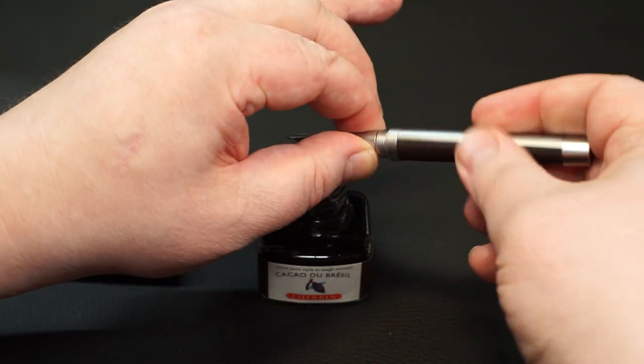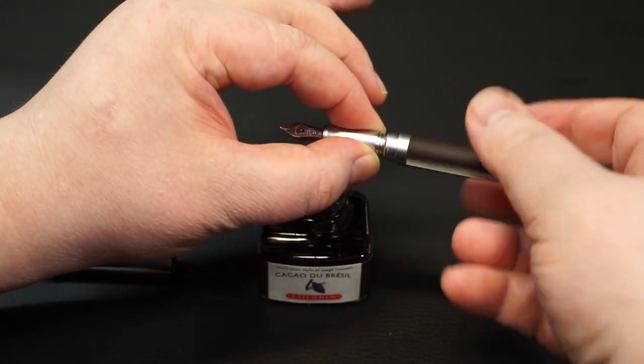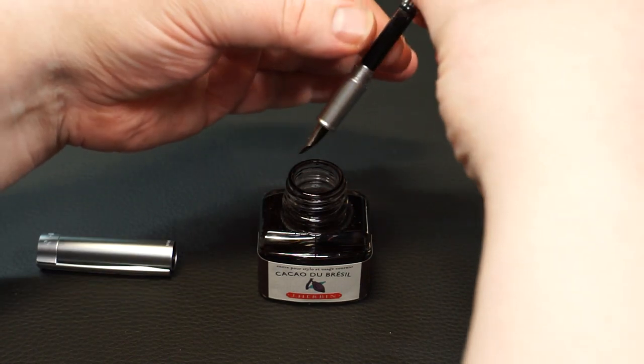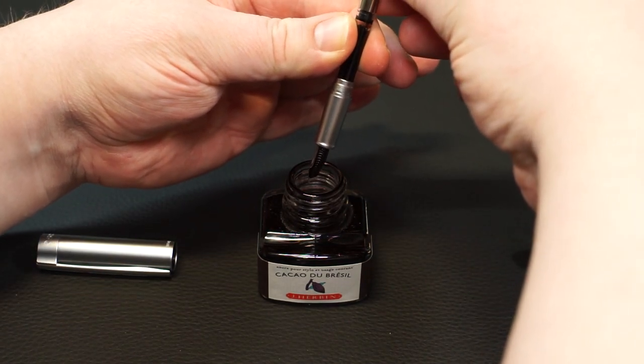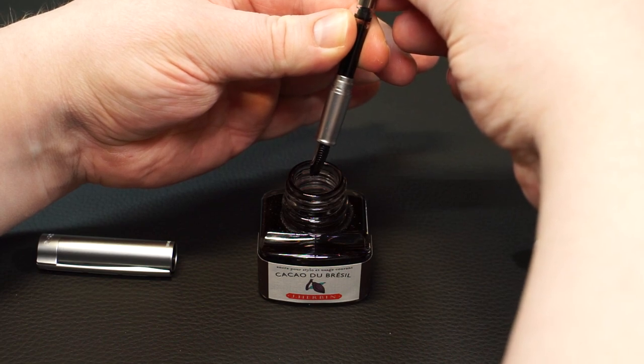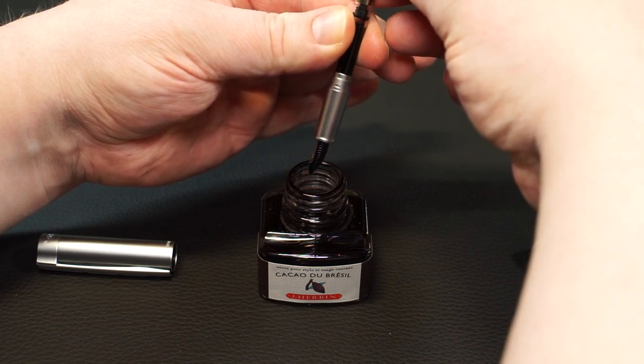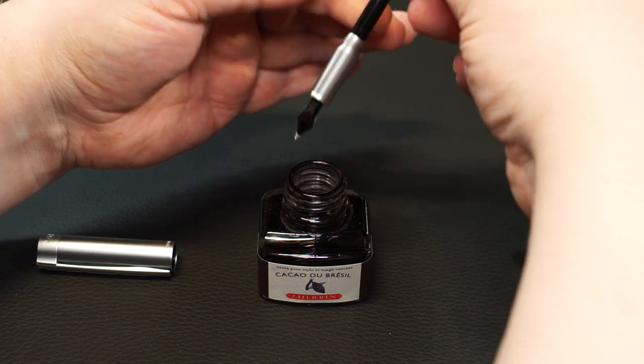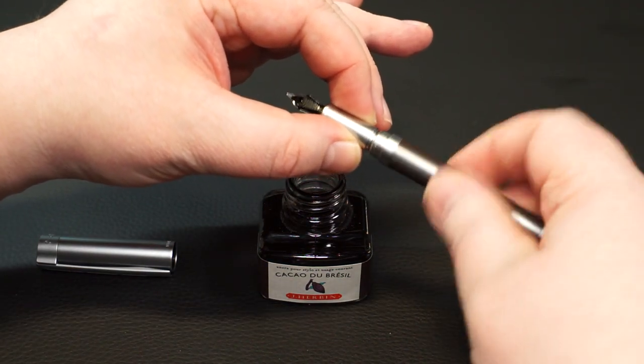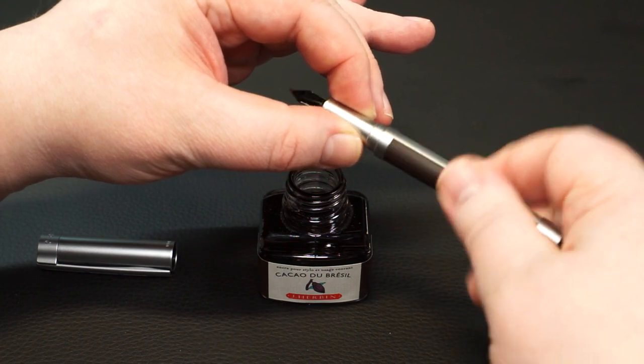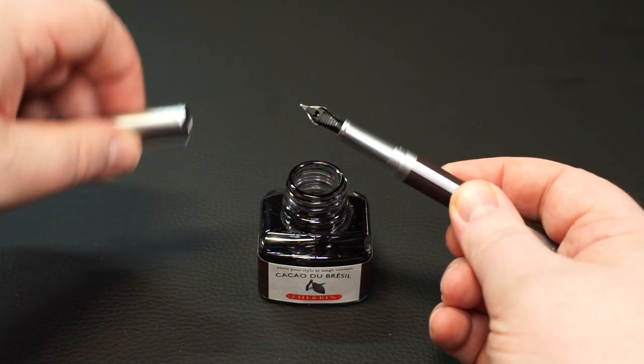You often hear that you should squeeze two or three drops of ink out of the converter, and then completely fill the converter outside of the ink. This measure is useful if you plan to put the fountain pen down after filling it. However, if you plan to write with it right away, this is not strictly necessary.